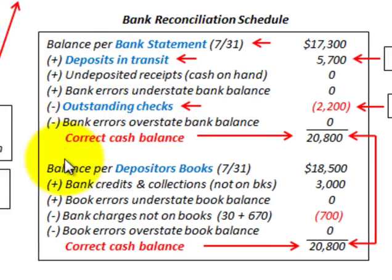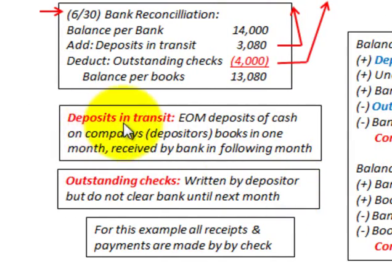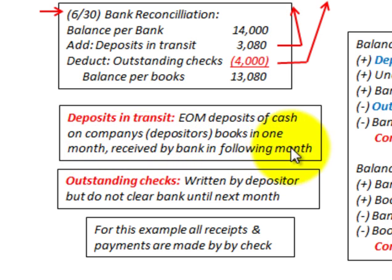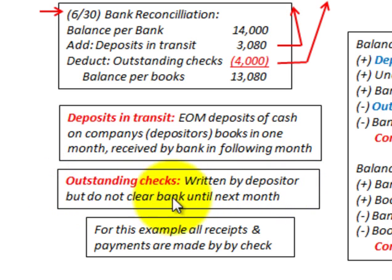Let's look at our definitions. Deposits in transit are the end-of-month deposits of cash on the company's books in the current month, but they're going to be received by the bank in the following month. The bank hasn't received or recorded these deposits yet, so we consider them deposits in transit. Outstanding checks are checks written by the depositor or company, but do not clear the bank until the next month. In this example, all receipts and payments are made by check.